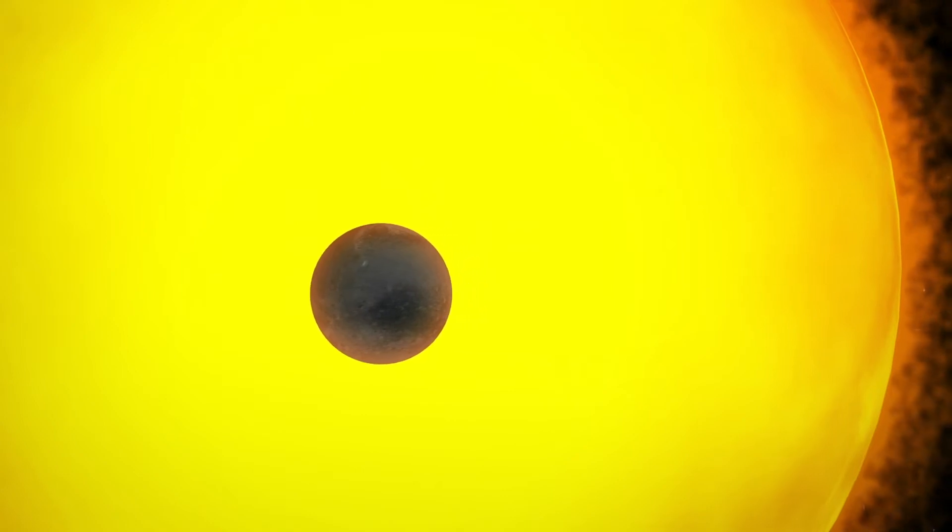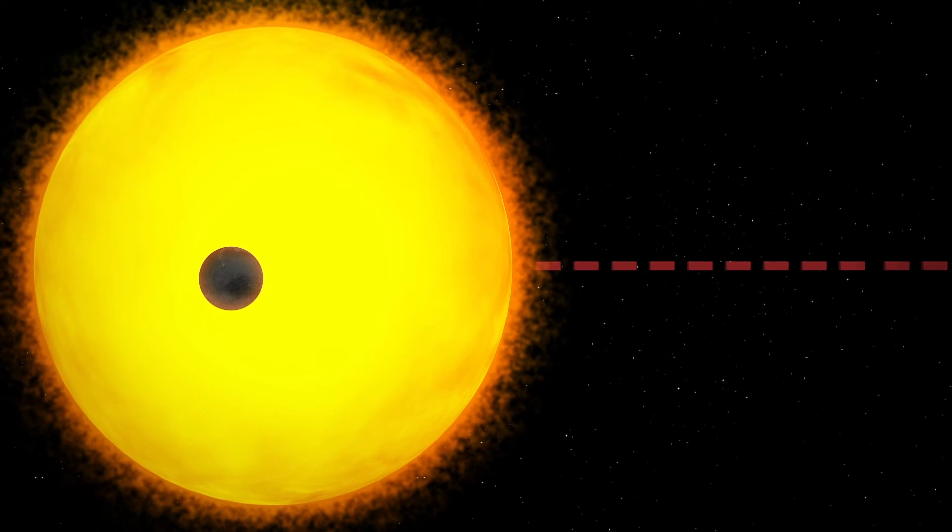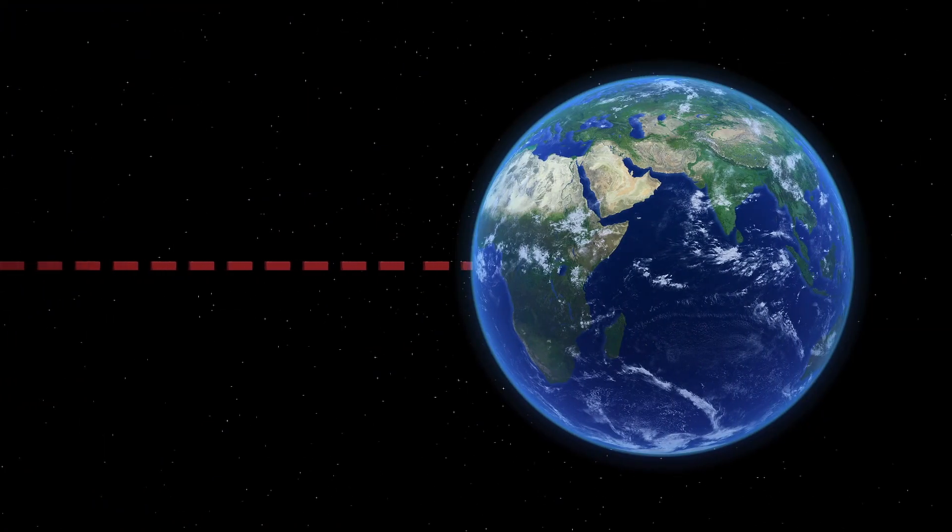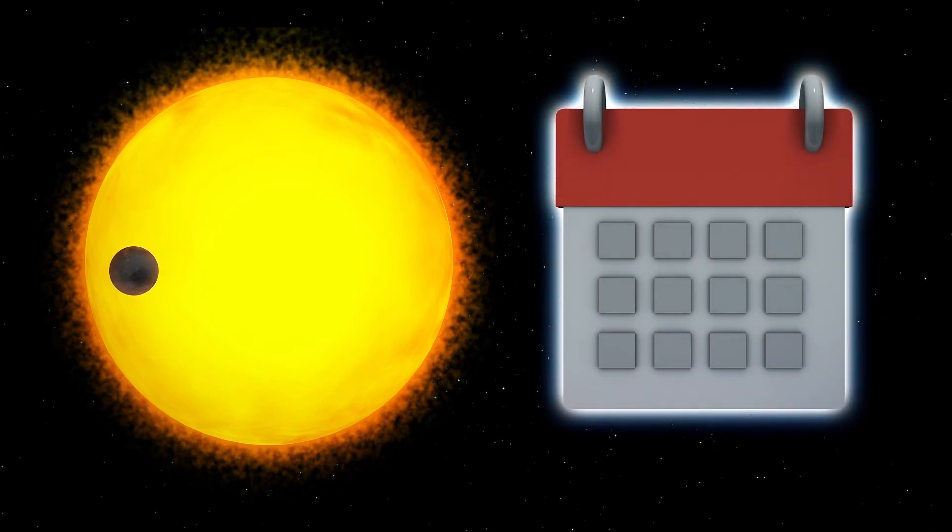Space.com reports the new exoplanet orbits a star named NGTS-4, which is around 920 light-years away from Earth. According to a University of Warwick press release, the exoplanet completes orbits of the star every 1.3 days.